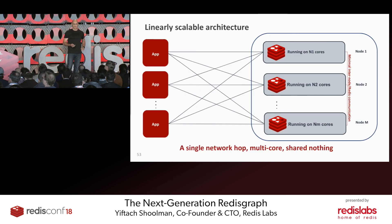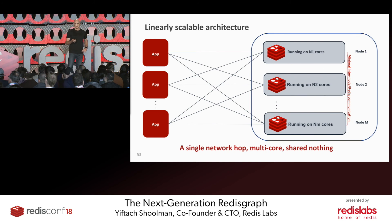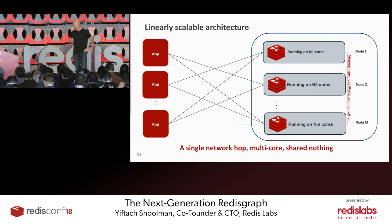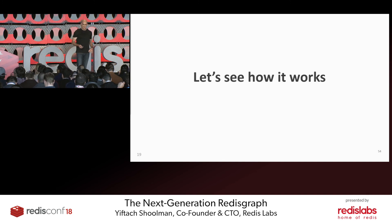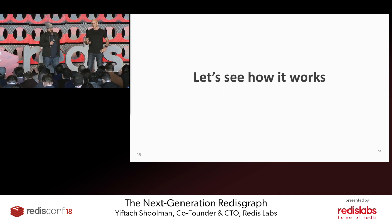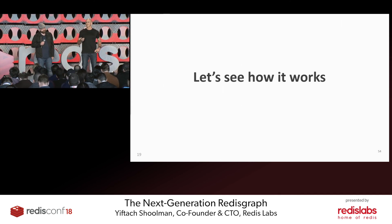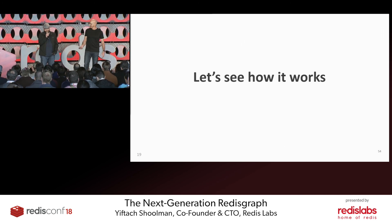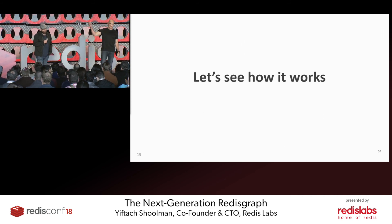With this architecture we practically achieve linear scalability — it's a single network hop, multi-core, and shared-nothing architecture. To see it in a live situation, I'd like to invite David Mayor to the stage. This is a recorded demo because it requires launching about 50 AWS instances — it never works live on keynotes.